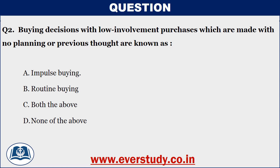The next question: buying decisions with low involvement purchases, which are made with no planning or previous thought, are known as what? That is, a product which a consumer buys without applying much mental effort, without searching for information, or without any planning at all — what is this type of buying called? Is it impulse buying, or routine buying?